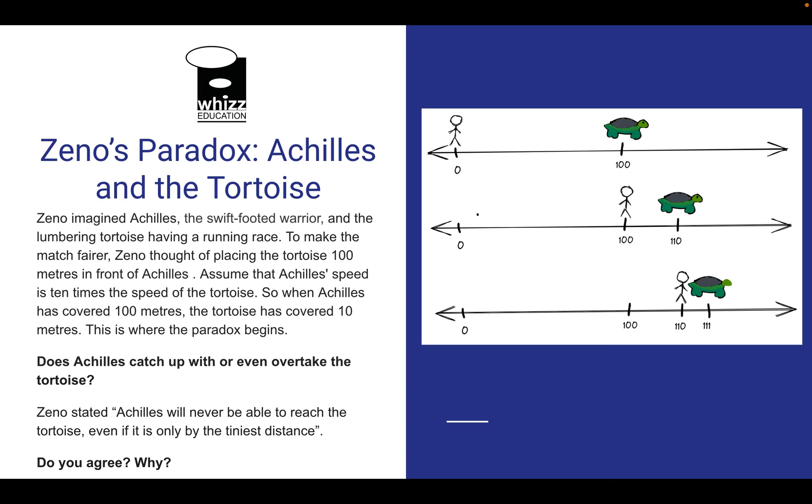Zeno imagined Achilles, the swift-footed warrior, and the lumbering tortoise having a running race. To make the match fairer, Zeno thought of placing the tortoise 100 metres in front of Achilles.